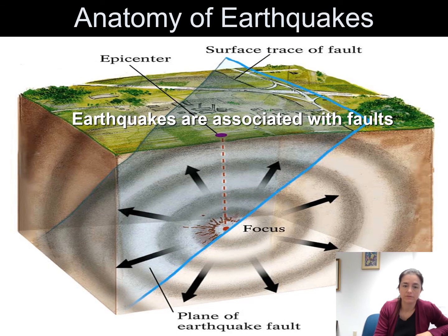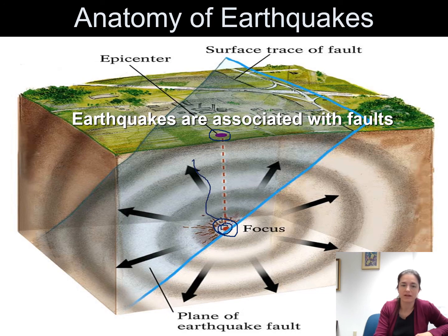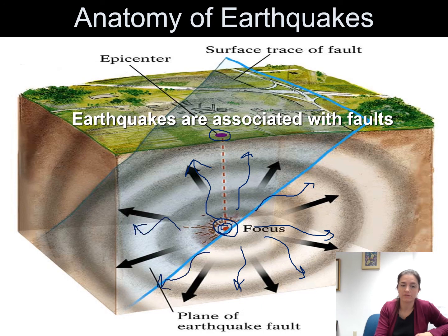Earthquakes occur underground — they don't actually happen at the surface. The epicenter is the location we can visualize on the surface, but the focus is actually where the energy is produced. These waves radiate out in every direction, so people on the surface feel them, and they can be felt very far away because the waves radiate everywhere — even going through the center of the earth. These are called seismic waves.